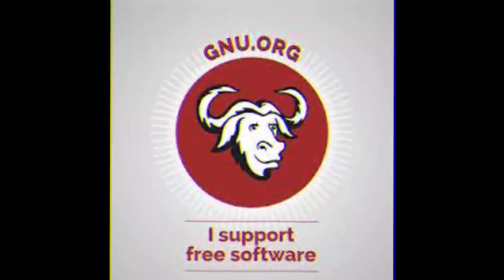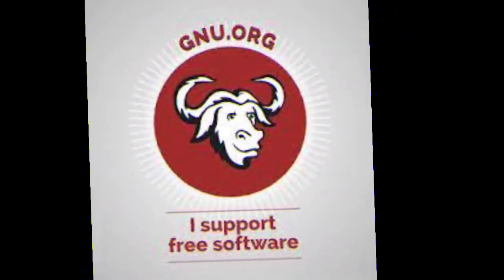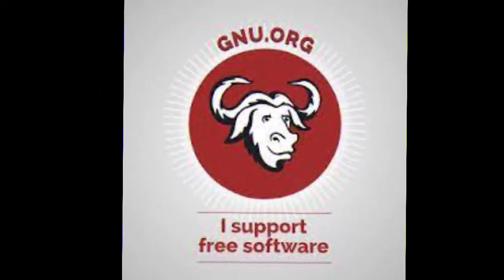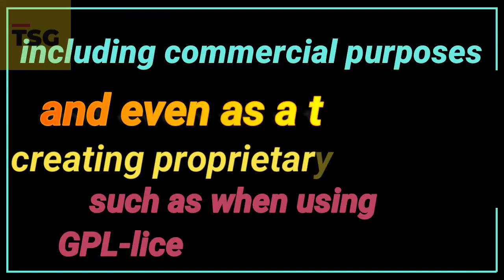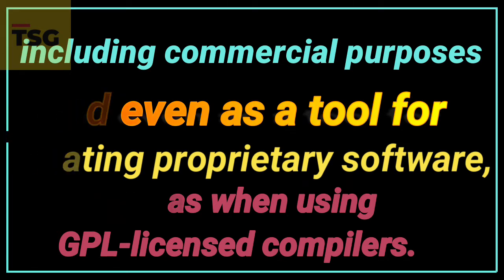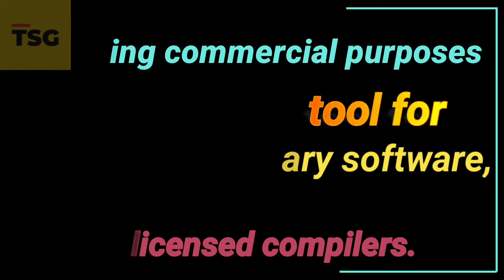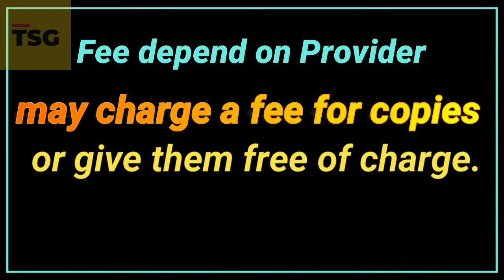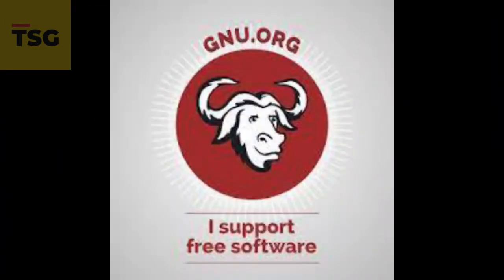Software under the GPL, or General Public License, may be run for all purposes including commercial purposes, and even as a tool for creating proprietary software. Users or companies who distribute GPL-licensed work may charge a fee for copies or give them free of charge — it depends on you or the company.